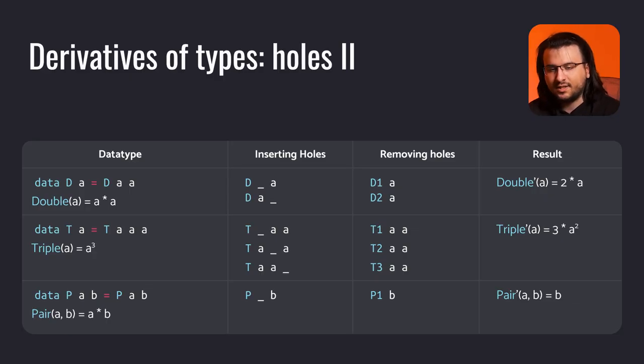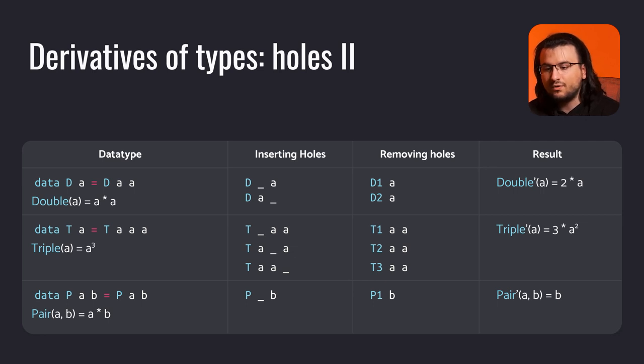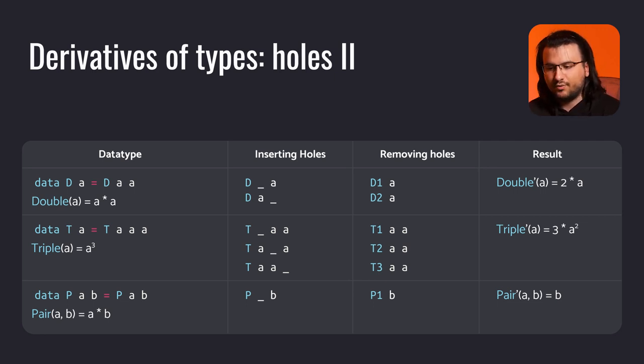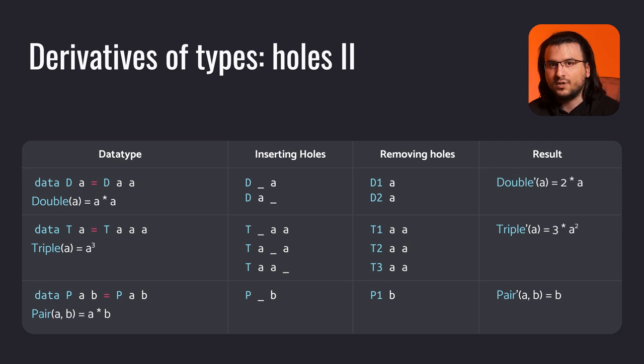We'll go through a multitude of examples to see what data types and mathematical expressions we get. First, the double data type, which encapsulates a pair of two values of type a. Its mathematical representation is a squared. We insert two holes, one at a time, in the data constructor d. After removing the holes, we're left with two unary data constructors, each wrapping a value of type a. The new data type, double prime, has mathematical representation 2 times a.